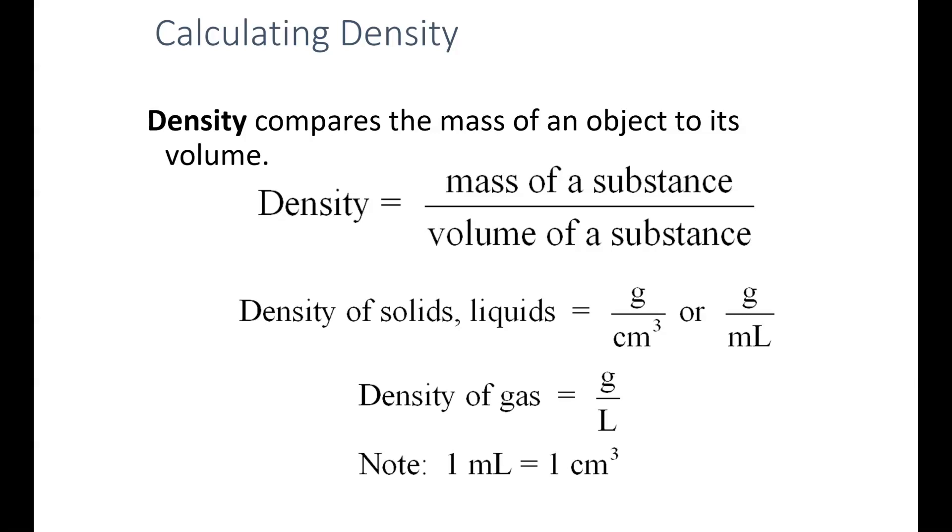Density is an example of a property that uses a compound unit. Density compares the mass of an object to its volume. Mass is typically measured in grams for density, although it can be measured in kilograms or other units, but we'll be using grams in this course.